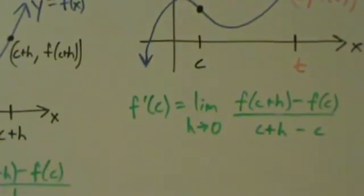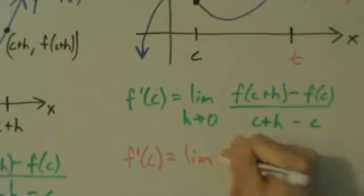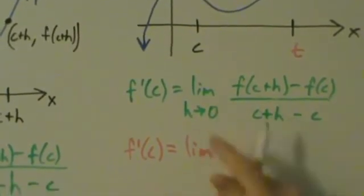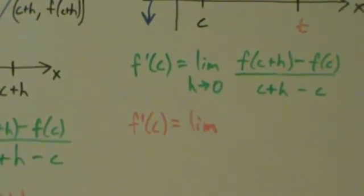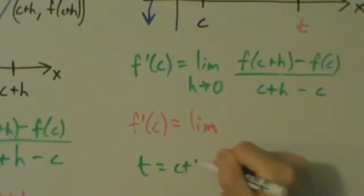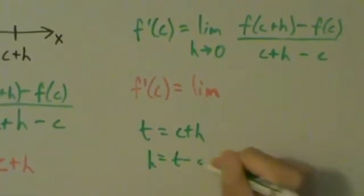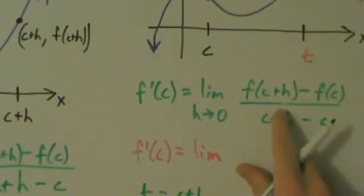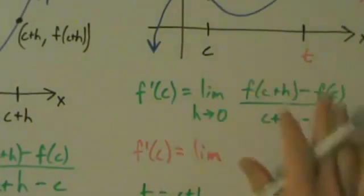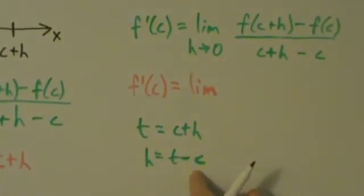So what we have is f prime of c equals the limit — now instead of h going to zero, what happens? Well, we said t equals c plus h, so that means h equals t minus c. We want to get rid of the h's because we're replacing c plus h with t. So we have to replace this standalone h with t minus c, because t is c plus h, so h is t minus c.